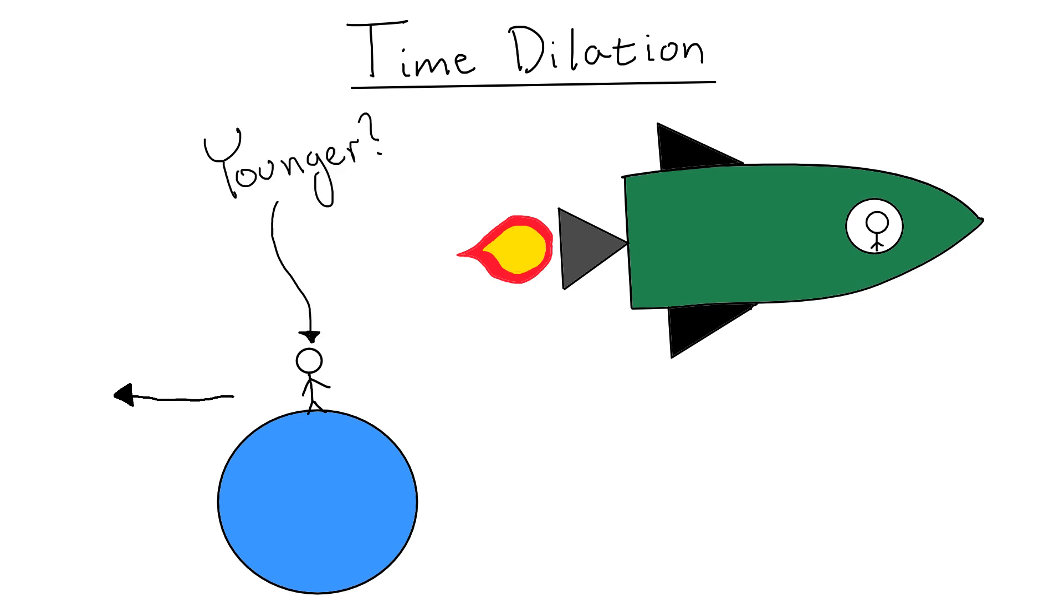So what gives? The two observers can't both be younger than the other, that doesn't make any sense. How can we possibly remedy this contradiction?